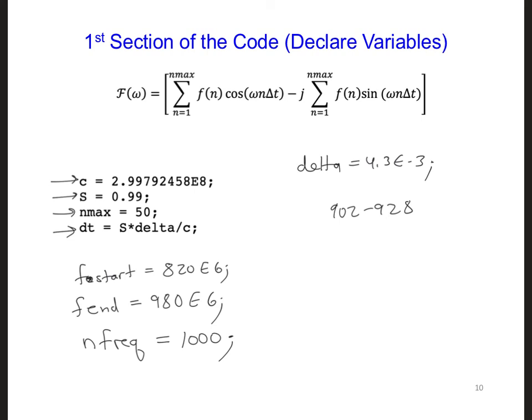Lastly, in order to calculate the DFT, we need to know the value of omega. Here, omega shows up a few times. And omega is 2 pi f. So we need to know the value of omega at each frequency of interest where we're going to evaluate the DFT.